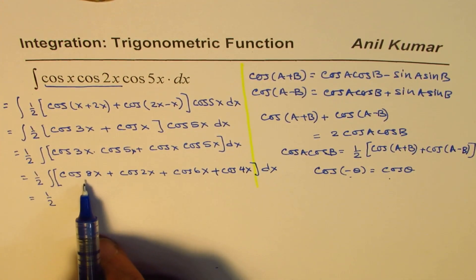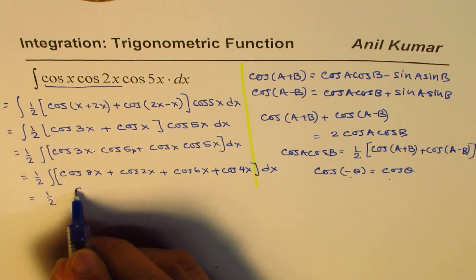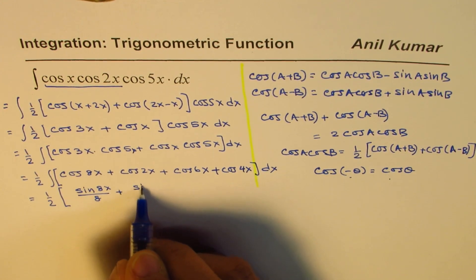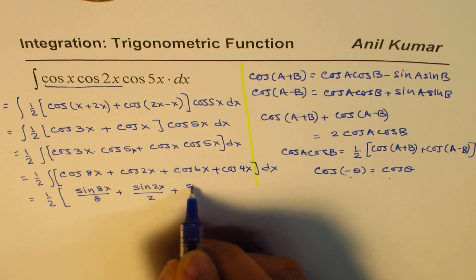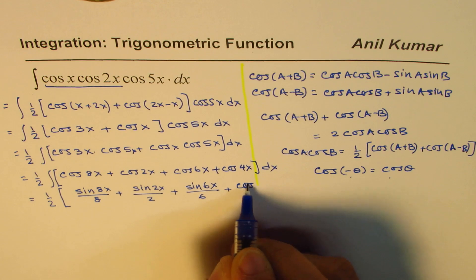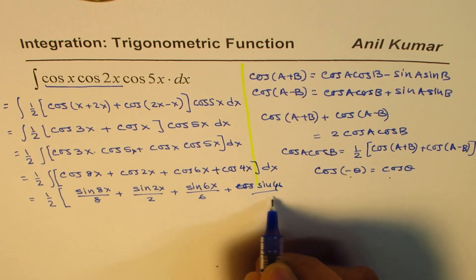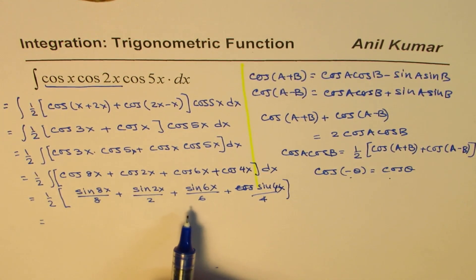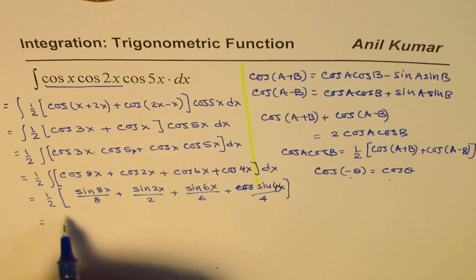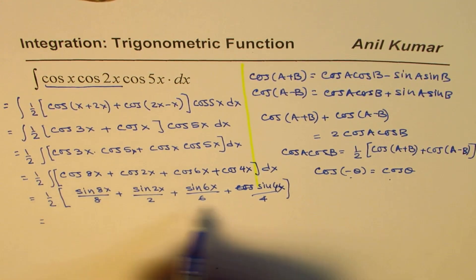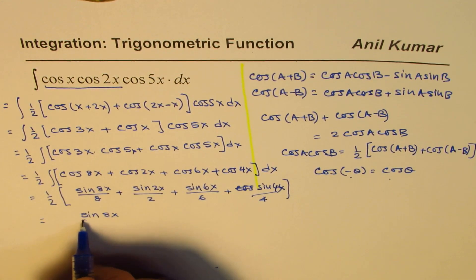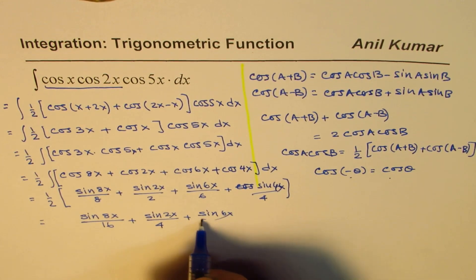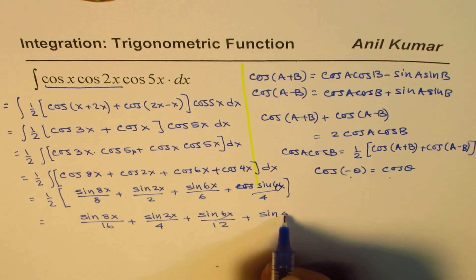Now it is easy to find the integral. We integrate each cosine term: integral of cos is sin, so we get sin(8x)/8 plus sin(2x)/2 plus sin(6x)/6 plus sin(4x)/4. Multiplying through by the half factor, the final answer is sin(8x)/16 plus sin(2x)/4 plus sin(6x)/12 plus sin(4x)/8.